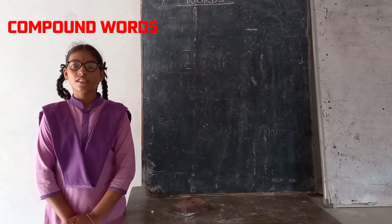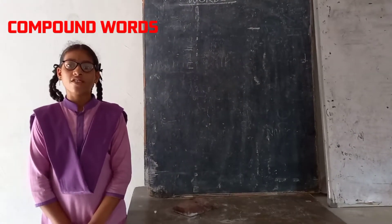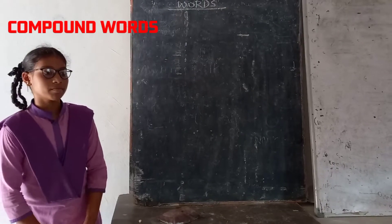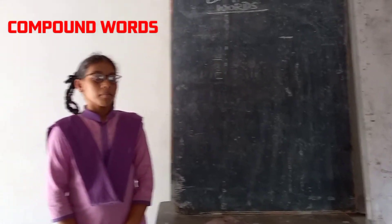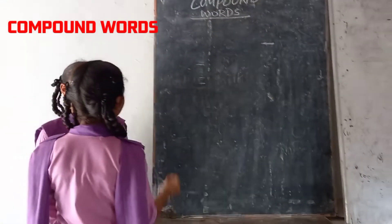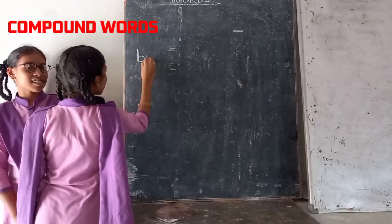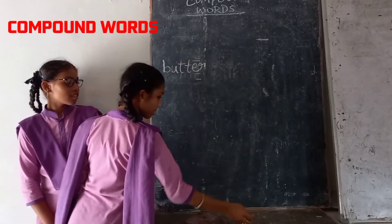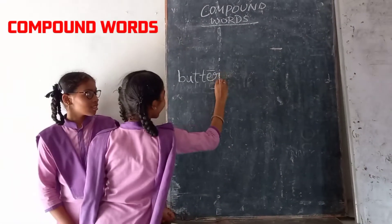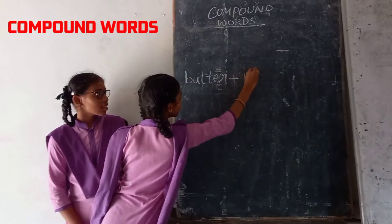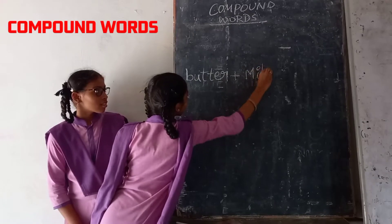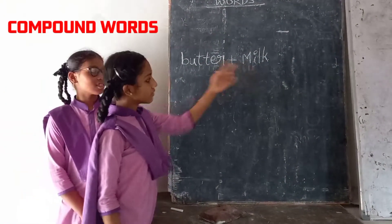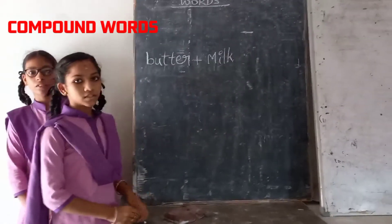Have you understood? Yes. Now I will give some hints and you have to create compound words. First one: butter plus milk. Butter is one word, milk is another word. They are mixed together and the new compound word is formed.